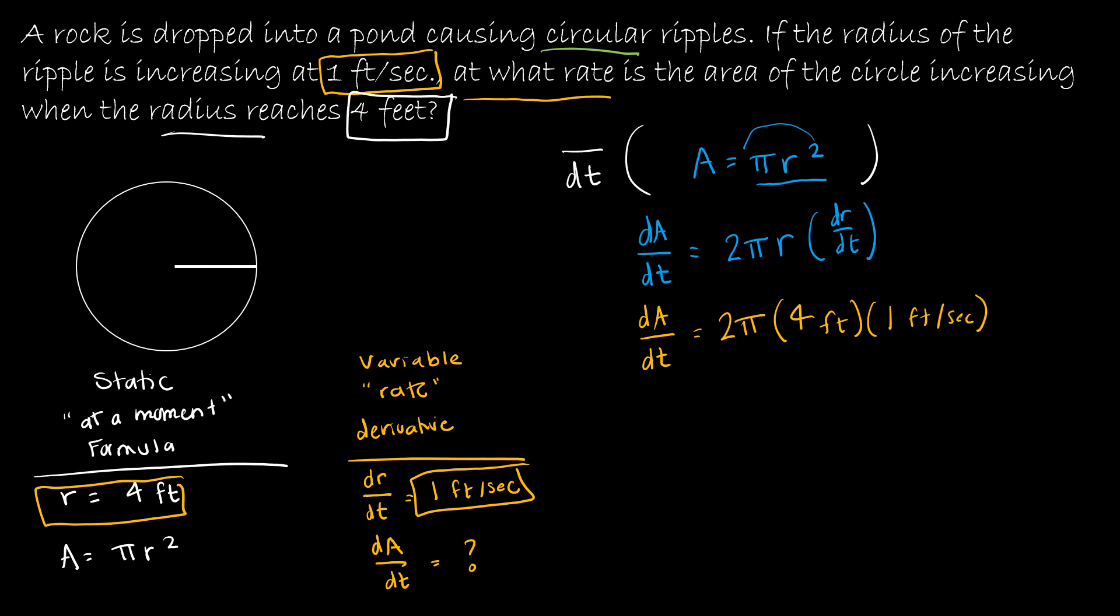Now, it's not mandatory that you leave the labels on there, but it does help when you get to the end of the question, because now as I multiply dA over dt, I have 2 times π times 4 times 1, so that's 8π.